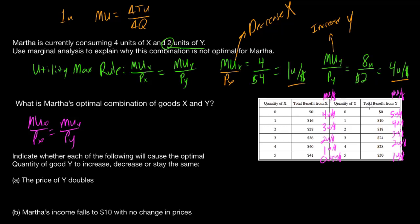Martha first buys 1 unit of Y at 5 utils per dollar, costing $2, leaving $18. The second unit of Y and the first unit of X both provide 4 utils per dollar. She buys both — $4 for X and $2 for Y — spending $6 and leaving $12. The third unit of Y and the second unit of X both provide 3 utils per dollar. She buys both for $6, leaving $6 remaining.